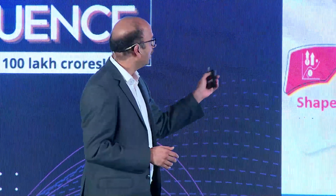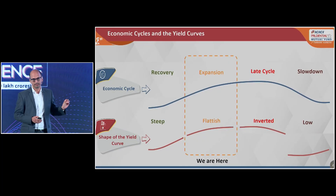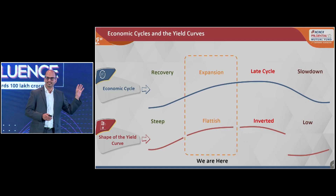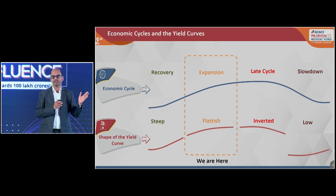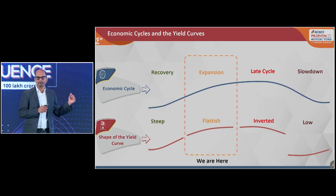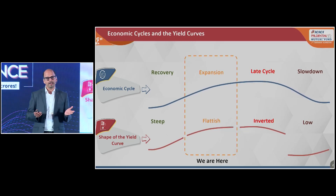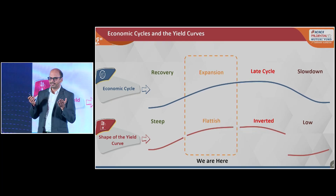So let me take you through the economic cycles. I'll take some time to help you understand why this is important — not only from a fixed income perspective, but also from an asset class perspective. The economic cycle flows in a circle. It starts with a recovery. The last one and a half to two years has been a recovery cycle after COVID. In the recovery cycle, the economy is generally very weak and it requires stimulus from both the government and the central bank. The central bank cuts interest rates, and the government stimulates the economy through large spending.